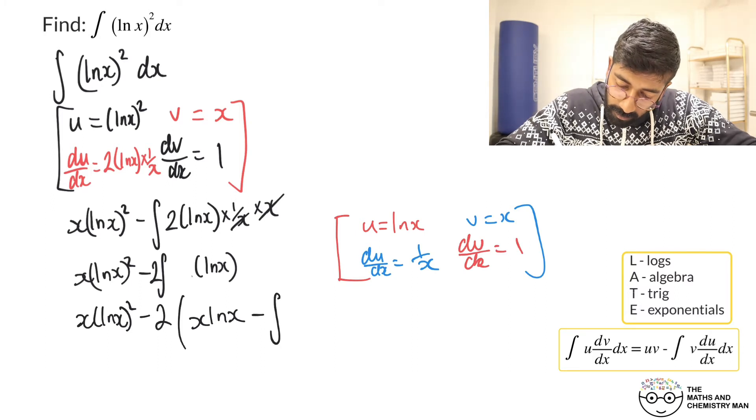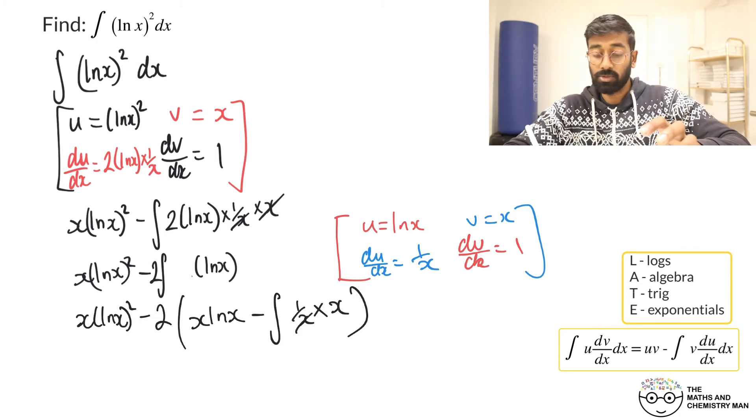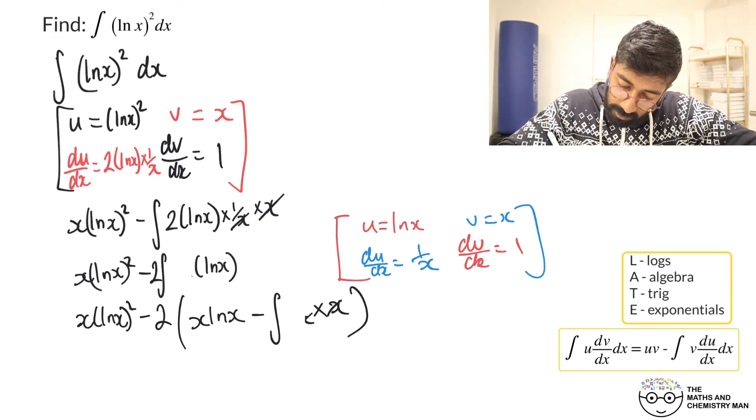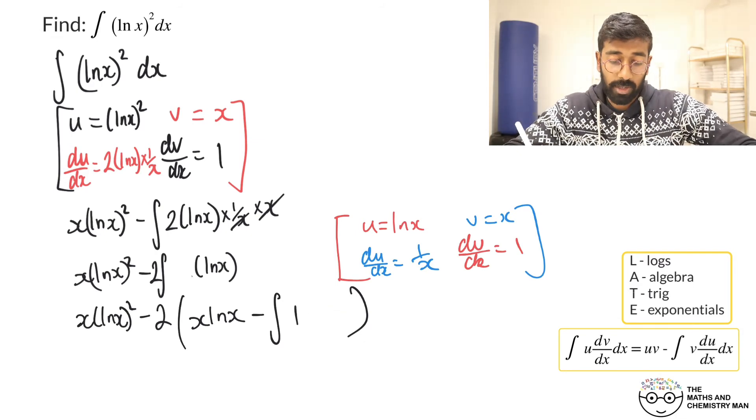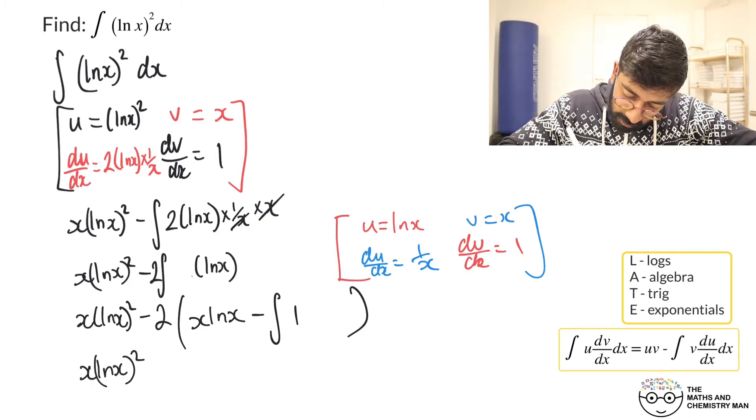the integral of 1/x multiplied by x. Now what can you see in here? Again we can cancel those and that's going to leave us with just 1. So let's just rub that out and put there it's just the integral of 1.